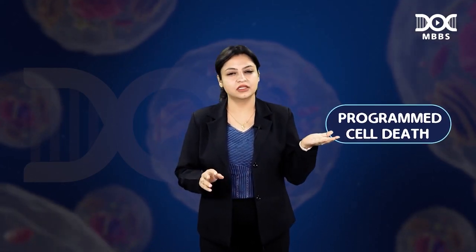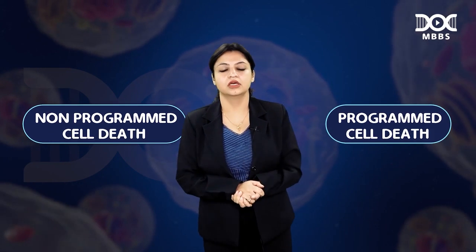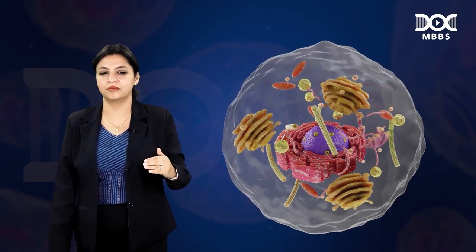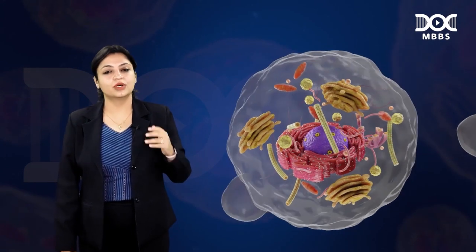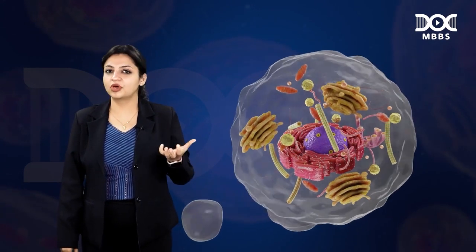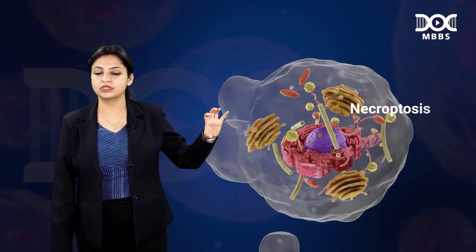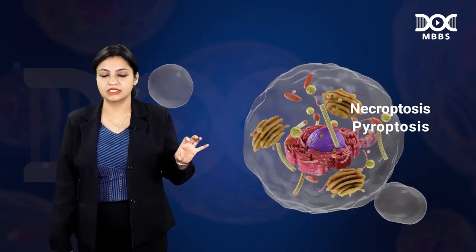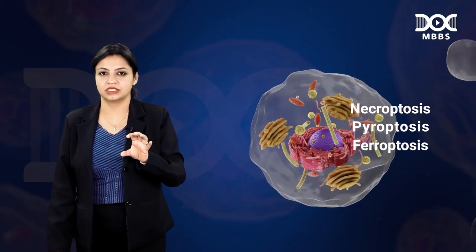What are the types of cell death? We have two major types of cell death: programmed cell death and non-programmed cell death. Programmed cell death means apoptosis and its variants. We have variants of apoptosis which we should know. The other types of programmed cell death are necroptosis, pyroptosis, and ferroptosis.